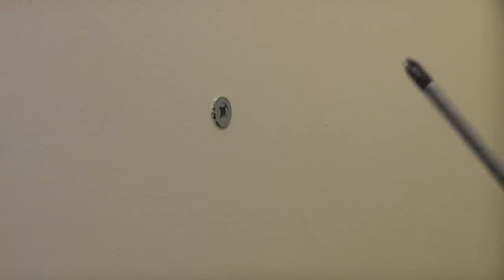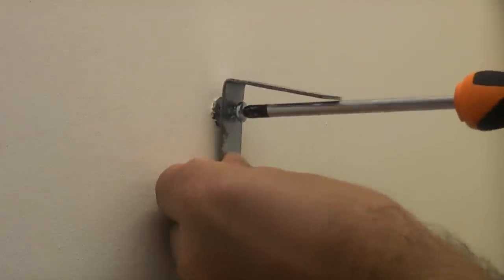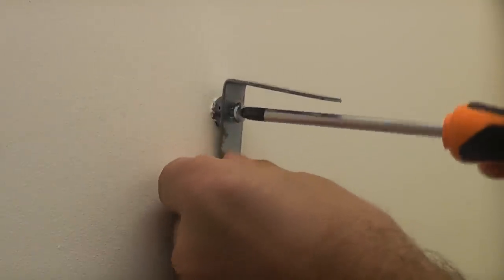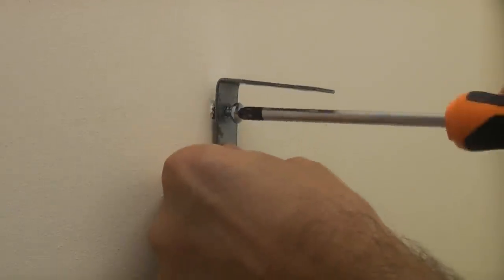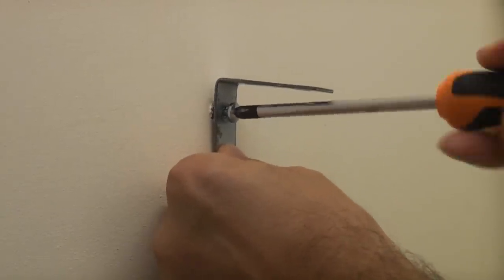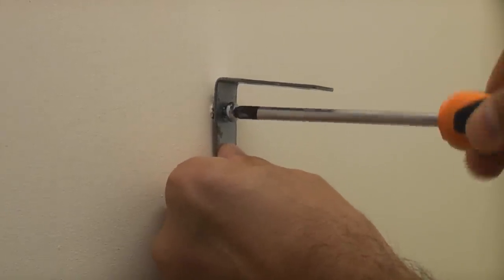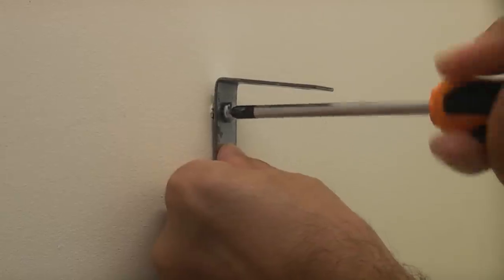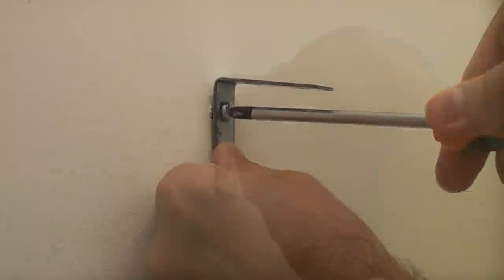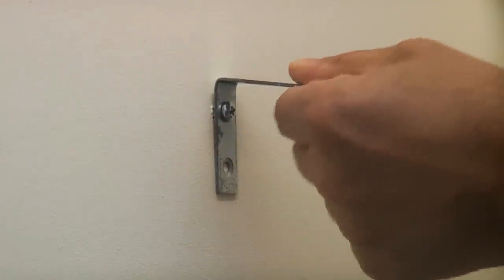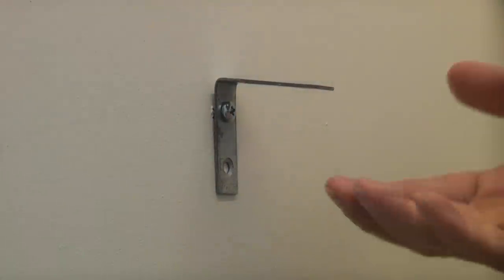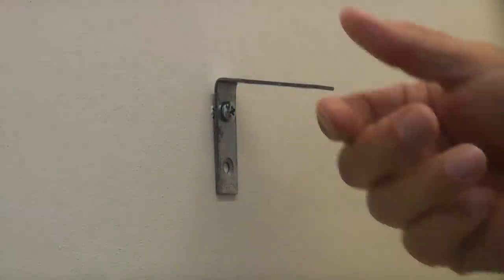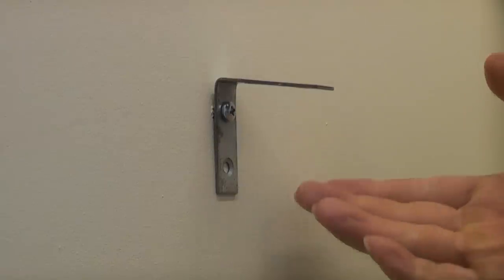Once it's in and it's flush with the surface, you can then take the item that you want to fix. In this case, we're fixing this 90-degree bracket, put that on there, and tighten up the self-tapping screw. So that has now given us a nice firm fixing. So for lightweight fixings, these really are ideal. They're very quick and very easy to use.